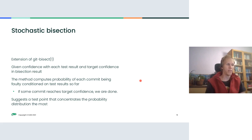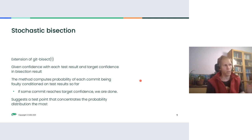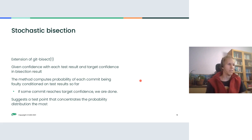If no commit has reached high enough confidence yet, we select the next test point that concentrates the probability the most. The principle is the same as before — commits are split into reachable and unreachable ones — but instead of just counting nodes you do weighted counting based on estimated probabilities for each node. The details are somewhat covered in the paper in the proceedings; the math requires basics from probability theory.